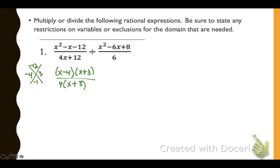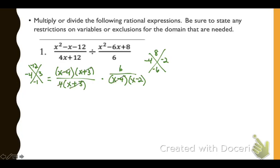When we're dividing rationals, we multiply by the reciprocal, so we change division to multiplication. We'll have 6 over that quadratic expression, looking for numbers that multiply to give us 8 and combine to give us negative 6. Negative 4 and negative 2 will work, and since our a value is 1, those will be our factored expressions. We can divide out any numerator with any denominator — the x minus 4s and x plus 3 cancel, and we can also divide out 2 from 6 and 4. We're left with 3 over 2 times the quantity x minus 2.